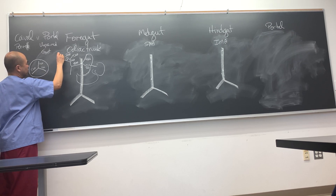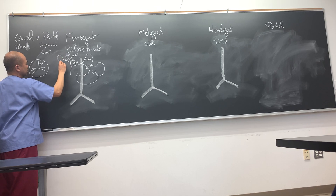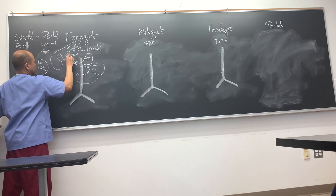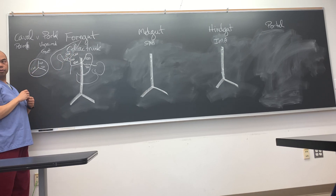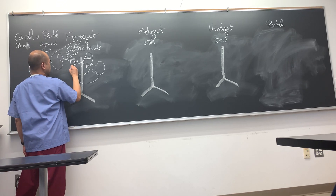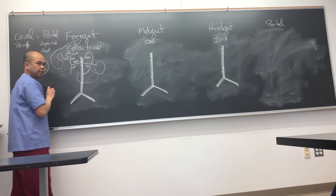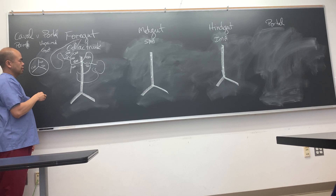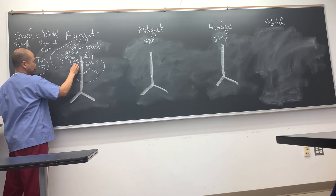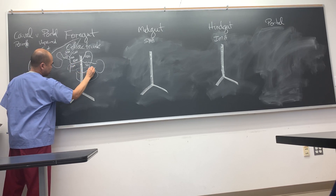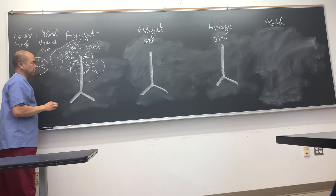Here's the gallbladder, and here's the liver. The branch that goes down is the gastroduodenal artery, and it goes behind the head of the pancreas. The tail of the pancreas goes all the way to the spleen.